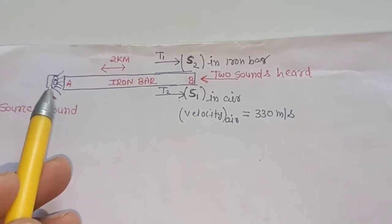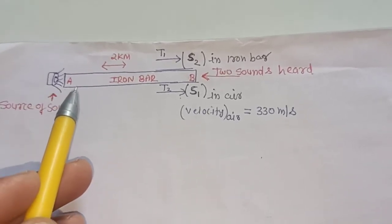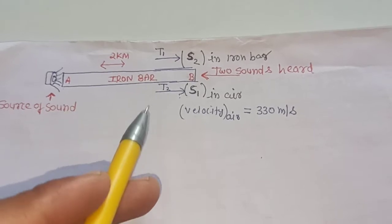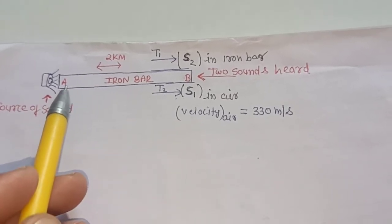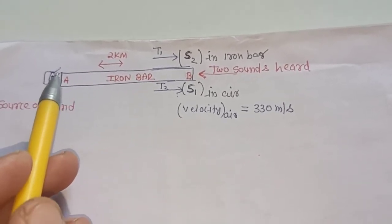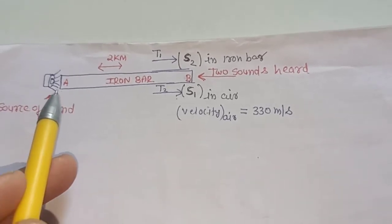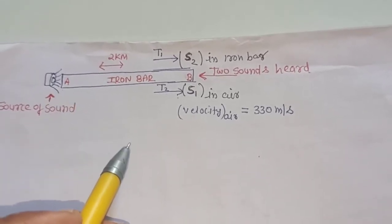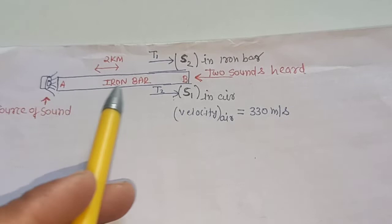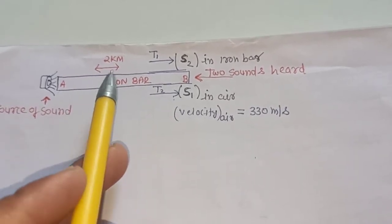In this question, one source of sound and one iron bar is given. At one end of this iron bar, sound is placed and sound is coming from this source. The distance from A to B, the length of bar, is 2 km.